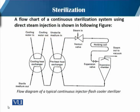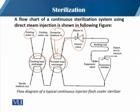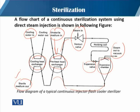In this slide you can see the whole system of continuous sterilization using direct steam injection. You can see the cooling heat exchanger and the preheat exchangers. Cooling water flows in and out, the unsterilized medium is injected, steam is directly introduced, and then there is the holding coil, followed by the expansion valve and expansion chamber. Steam goes to the vacuum, and then the sterilized medium is obtained. This is the typical flow diagram of the continuous injector flash-cooler sterilization system.